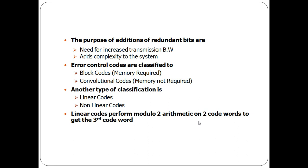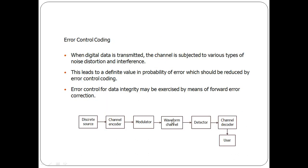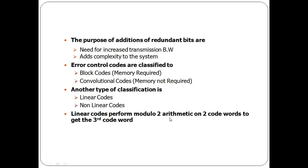With the help of linear block codes and convolution codes, we will see the purpose of the additional bits. While transmitting, we add some extra bits called redundant bits. The purpose of these redundant bits is to increase transmission bandwidth and to help with error control, but it also adds complexity to the system.